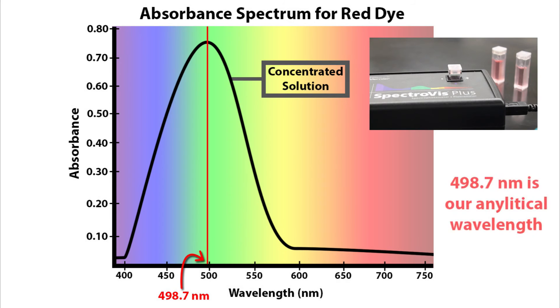498.7 nanometers should be our analytical wavelength, or where we take all of our absorbance measurements from now on. Let's try this again with our 50% dilute solution. Pause the video and make a prediction of where the absorbance spectrum will end up. Remember Beer's Law.